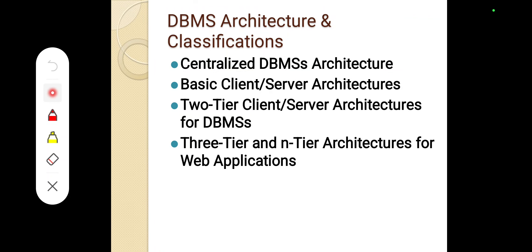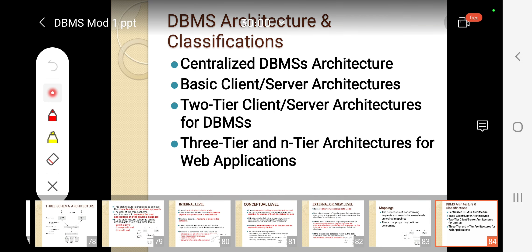Now we are going to see the topic: the different classifications of DBMS architecture. DBMS architecture is basically classified into four types: centralized DBMS architecture, basic client-server architecture, two-tier client-server architecture, and three-tier architecture. Let us go into the details.